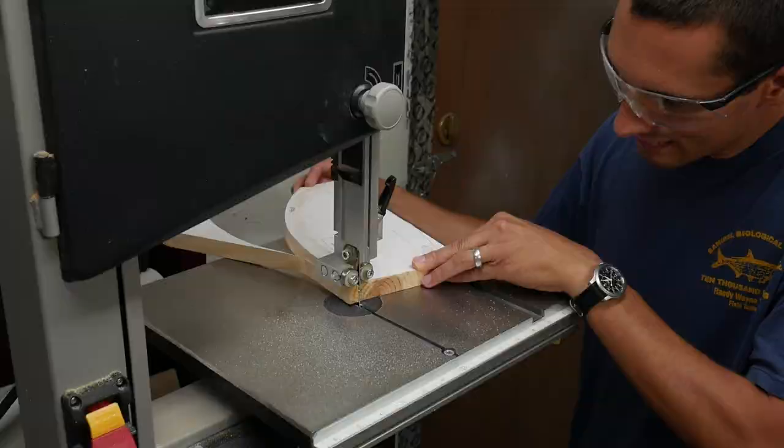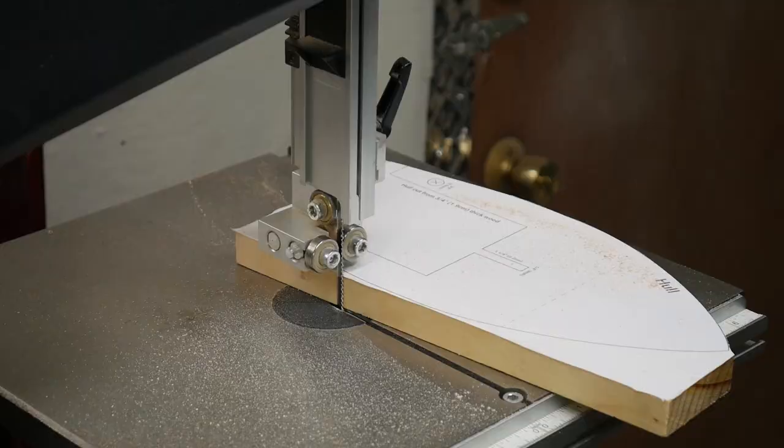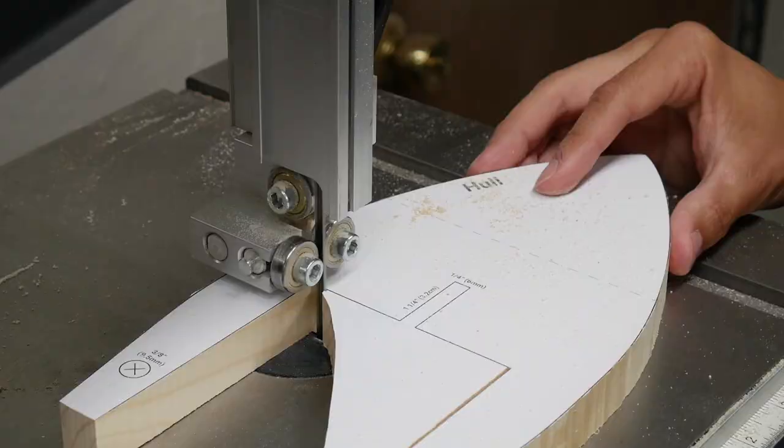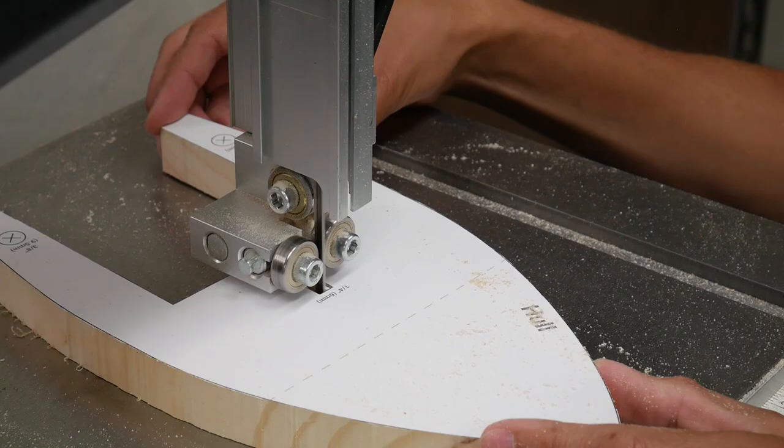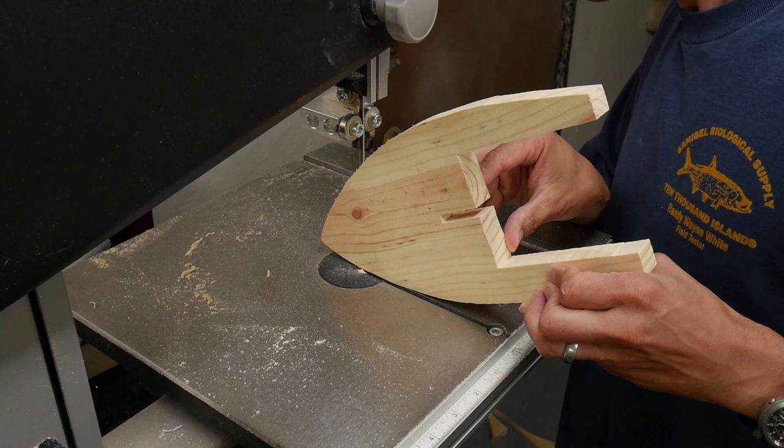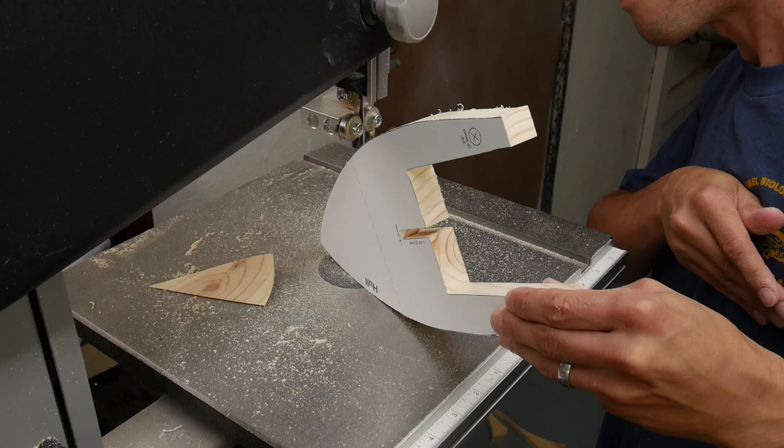A scroll saw, jigsaw, or coping saw would also work. I wanted the bottom of the bow of the boat to be sloped so I cut that slope freehand with the bandsaw. This worked okay but was a little rough.